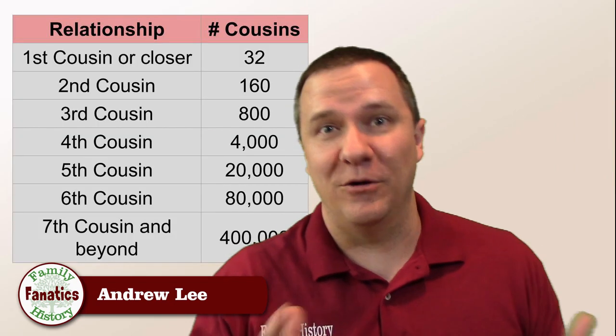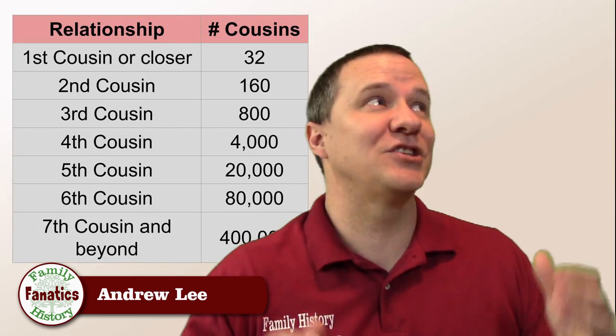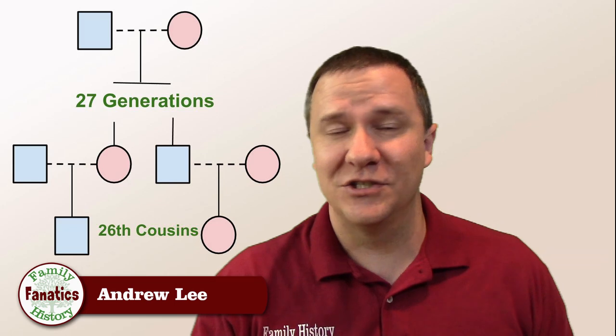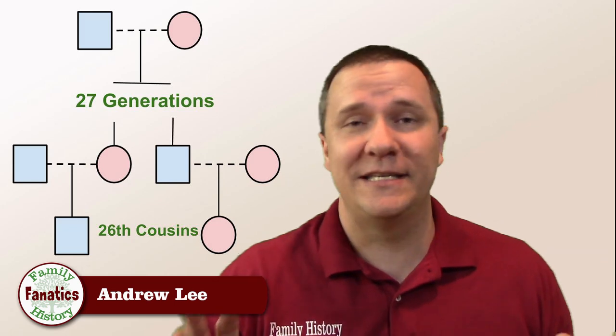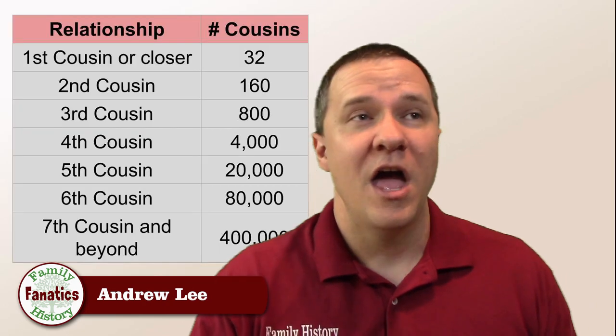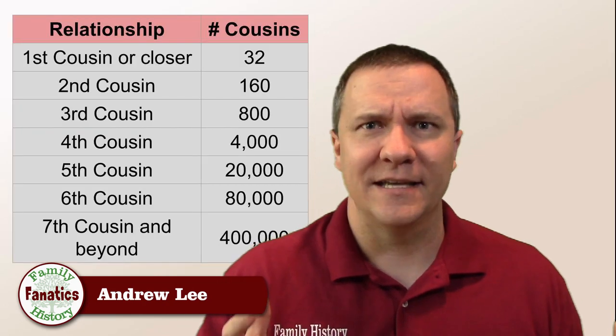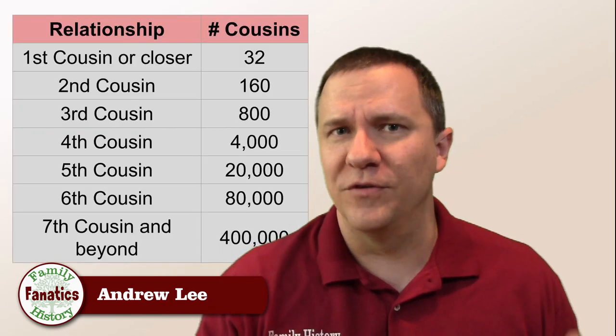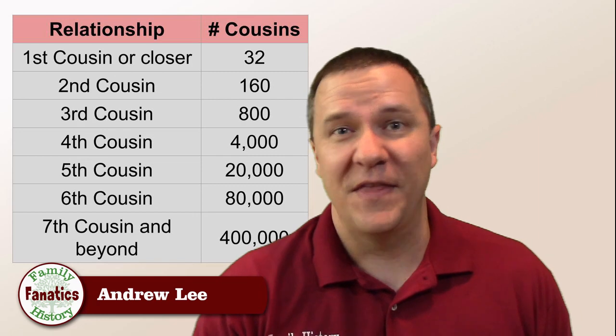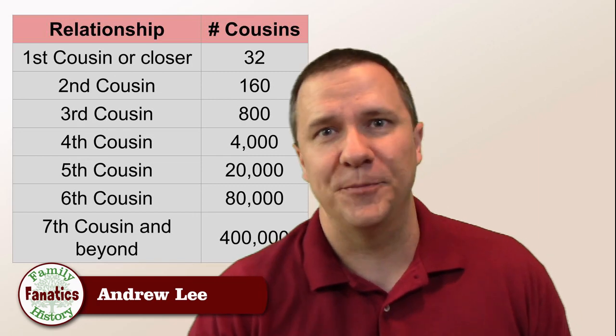We have thousands of cousins — actually, we have billions of cousins because we're all cousins. The only problem is almost all of these cousins are really distantly related to us. But even when we're talking about close relatives, everyone usually has several hundred fourth cousins or closer that they're related to.